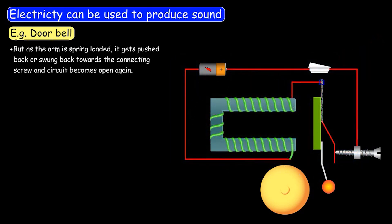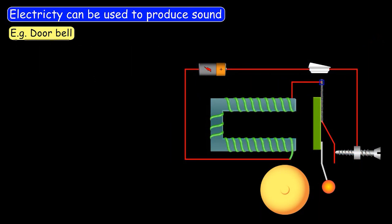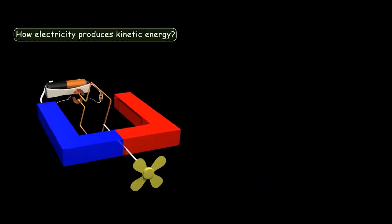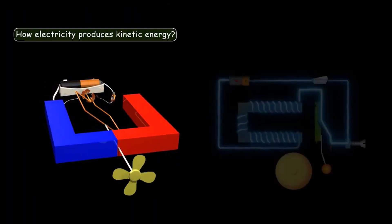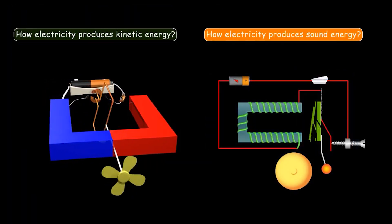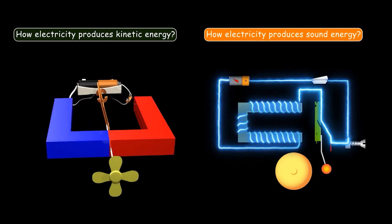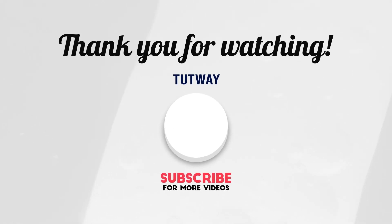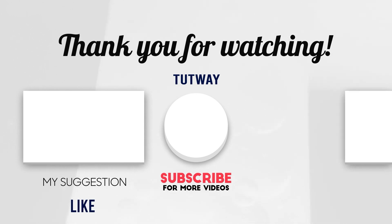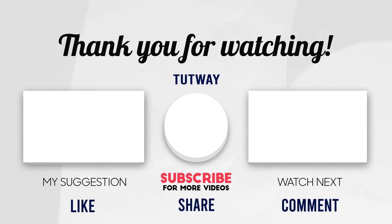This was so interesting — how the electromagnet is used to produce sound. So friends, we learned how electricity produces motion, or kinetic energy, and how electricity produces sound energy. Thank you so much for watching. Don't forget to like, comment, and share this video. If you want to see more fun videos, hit the subscribe button, and you can also follow us on Facebook and Instagram for more content.